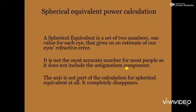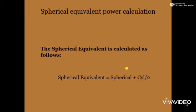It is not the most accurate number for most people, as it does not include the astigmatism component. The axis is not part of the calculation at all — it completely disappears. After calculating the spherical equivalent power, the cylinder power value is effectively removed. The spherical equivalent formula is: Spherical plus half of the cylinder.